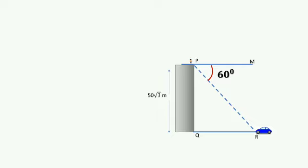If MPR is equal to 60°, then PRQ also becomes 60° since they are alternate angles. This is parallel to this, and PR is the transversal.